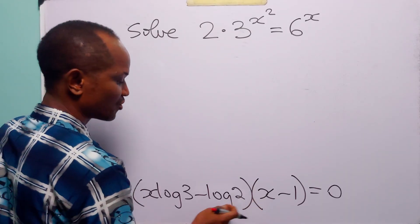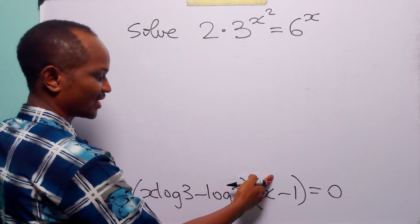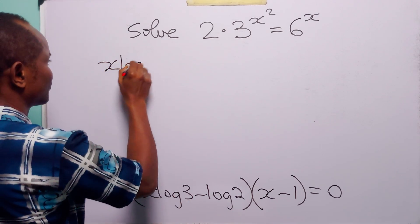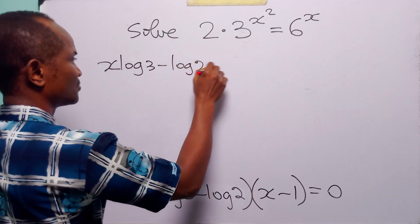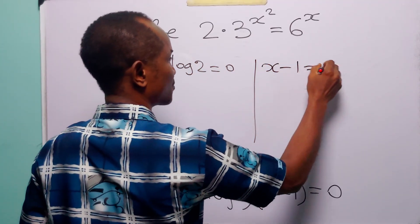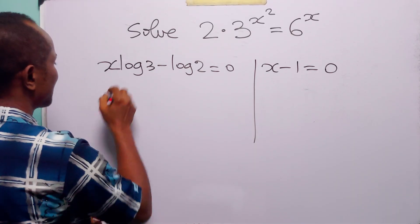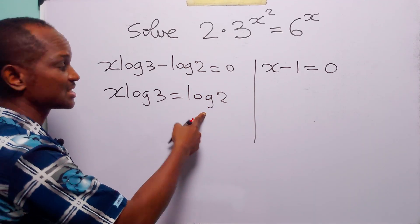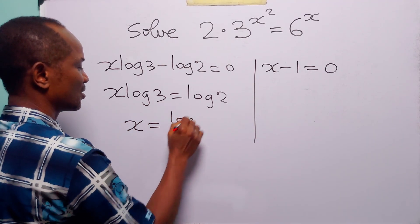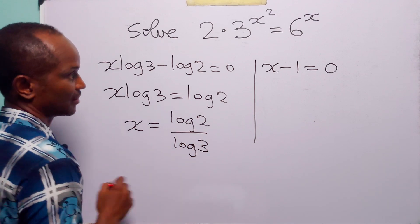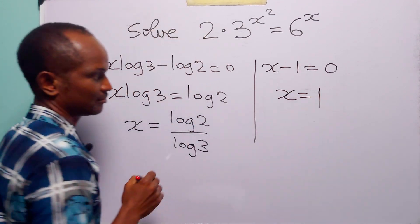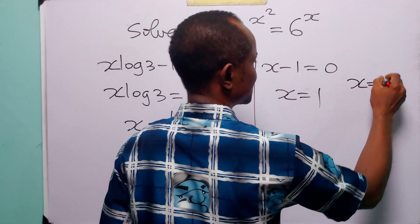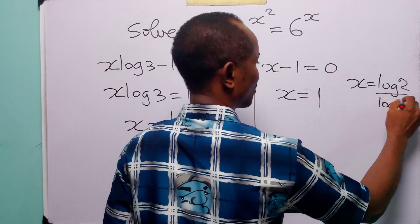When the product of two items is zero, either one or both of the items is equal to zero. So we have either x log 3 minus log 2 equals 0, or x minus 1 equals 0. From the first, x log 3 equals log 2, and dividing both sides by log 3, x equals log 2 over log 3. From the second, x equals 1. This is the integer root, and x equals log 2 over log 3 is the non-integer root we are looking for.